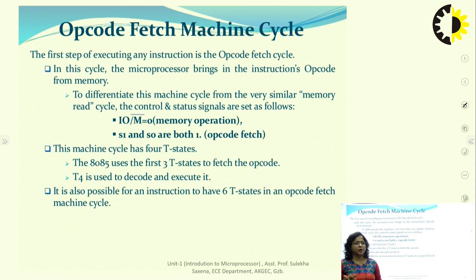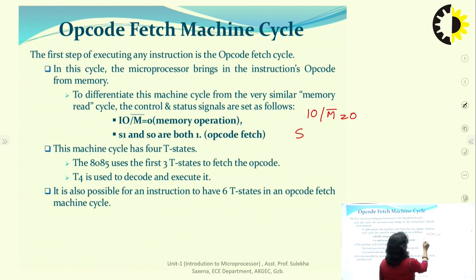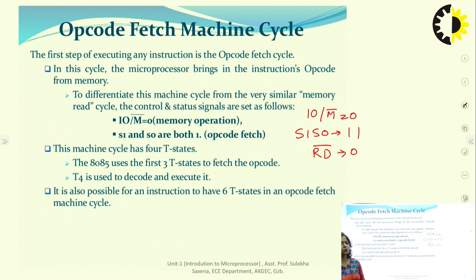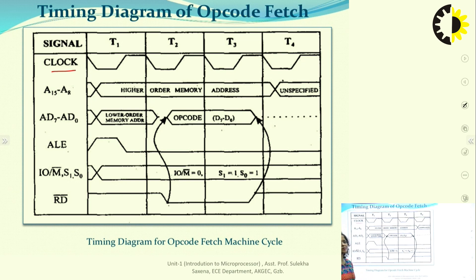During opcode fetch, the microprocessor fetches opcode from memory, so it is basically a memory read operation. IO/M̄ is 0 since we take opcode from memory; S1 and S0 are both 1 as we are in a read cycle; and R̄D̄ will be 0 during T2 and T3. The fourth T state is used to decode and execute the instruction. For 16-bit operations, the opcode fetch cycle extends from 4 to 6 T states. We draw 4 clock pulses for a standard opcode fetch timing diagram.